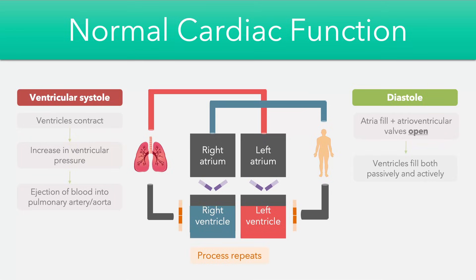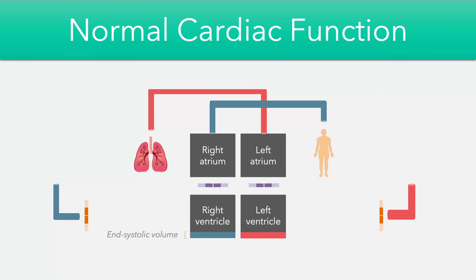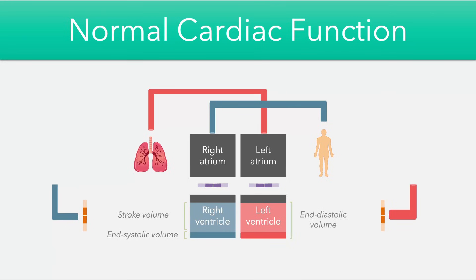During ventricular systole when the blood is ejected from the heart, a small volume of blood actually remains in the ventricles — this is referred to as the end systolic volume — while the amount that was ejected is referred to as the stroke volume. If we add both of these values together, we get what's called the end diastolic volume, which is basically the total volume of blood in the ventricles before ejection.